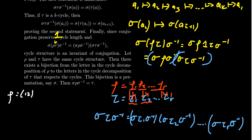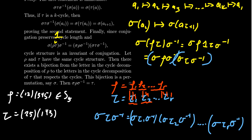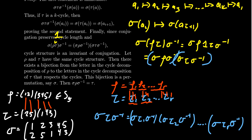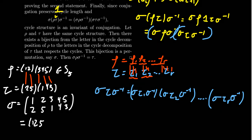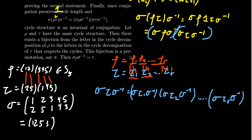Suppose rho is the permutation (1,2)(3,4,5), a 2-cycle times a 3-cycle living inside S5. And suppose tau is (2,5)(1,4,3) — also a 2-cycle times a 3-cycle. We construct sigma by matching up the letters: from rho's cycles, 1 goes to 2, 2 goes to 5, 3 goes to 1, 4 goes to 4, 5 goes to 3. Writing this in cycle notation: 1 goes to 2, 2 goes to 5, 5 goes to 3, which goes back to 1, and 4 is fixed. So sigma is the cycle (1,2,5,3). That's the bijection connecting these two permutations.